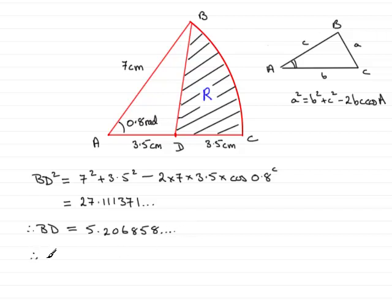So, therefore, the perimeter of R, make sure you have an introduction there. The perimeter of R is going to be the length of the arc, which was the answer we found in part A. That's going to be 5.6 centimeters,